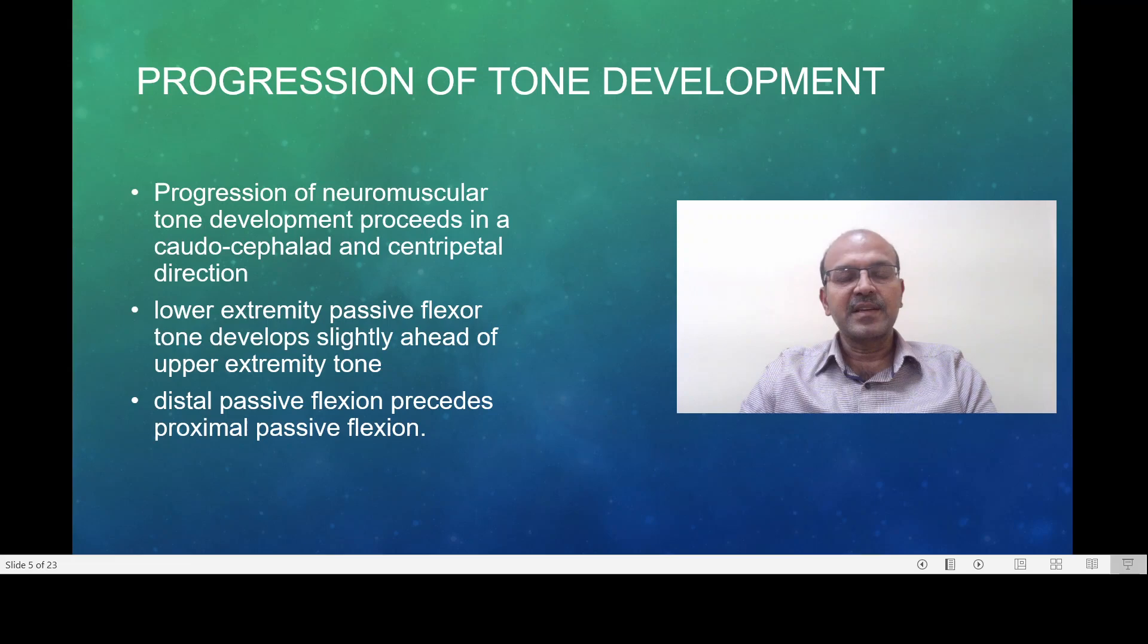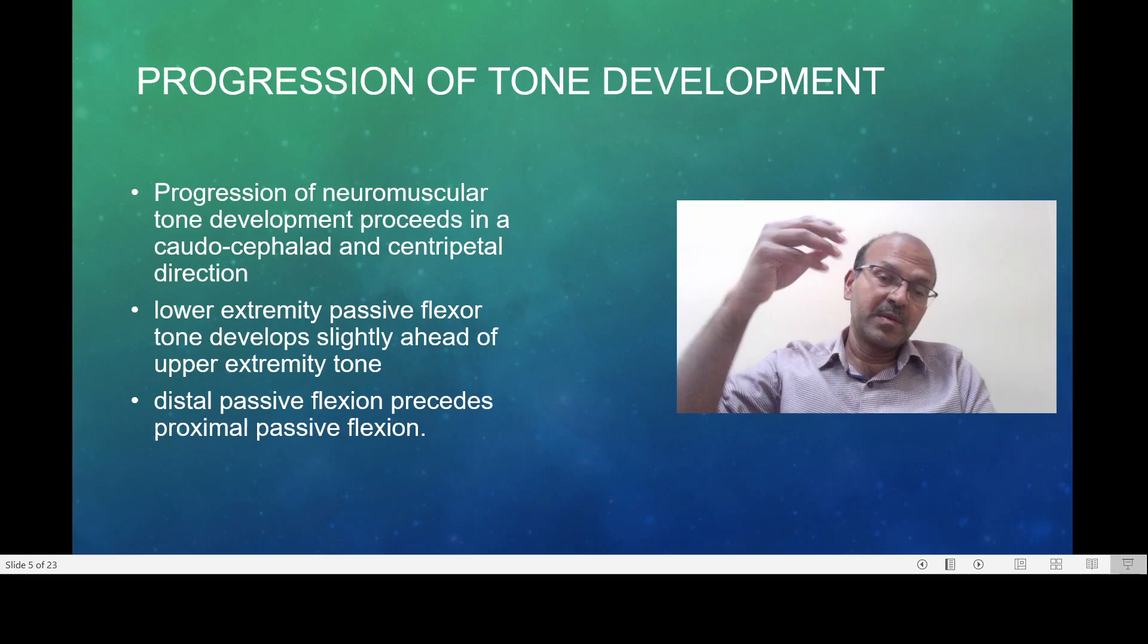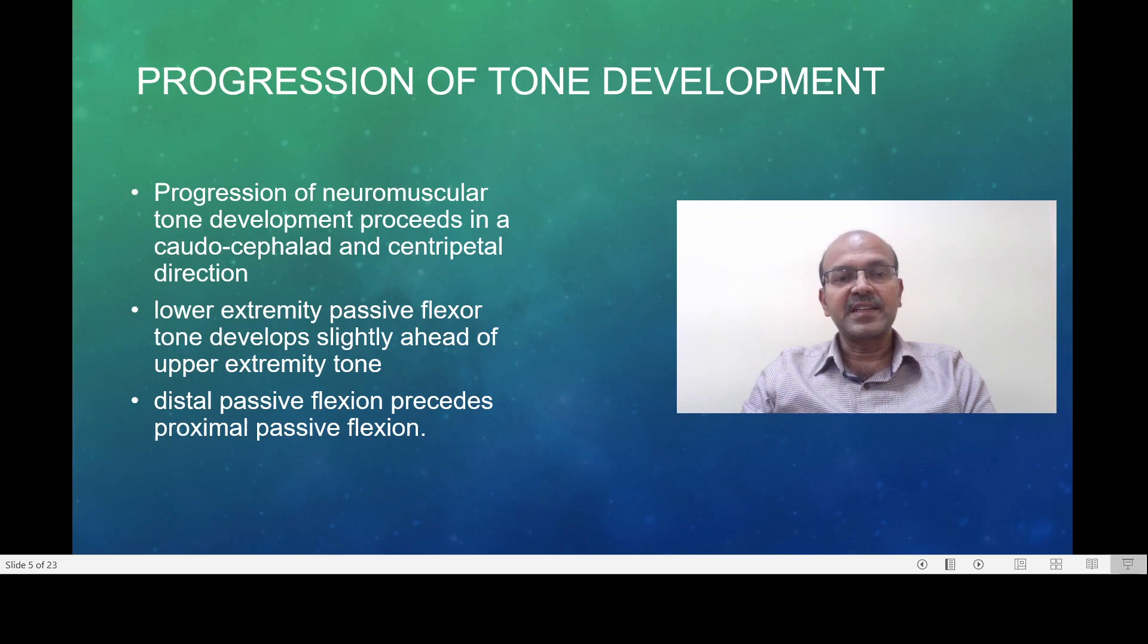The neuromuscular tone development proceeds in a caudal to cephalad direction. So the lower limb matures more towards the foot first and then near the hip joint. And there is a centripetal direction, so it is towards the center. The lower extremity passive flexor tone develops slightly ahead of the upper extremity tone and the distal passive flexion precedes the proximal passive flexion.